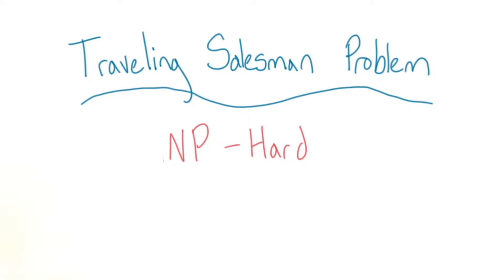The traveling salesman problem falls into a special class of problems called NP-hard. NP-hard problems don't have a known algorithm that can solve them in polynomial time.